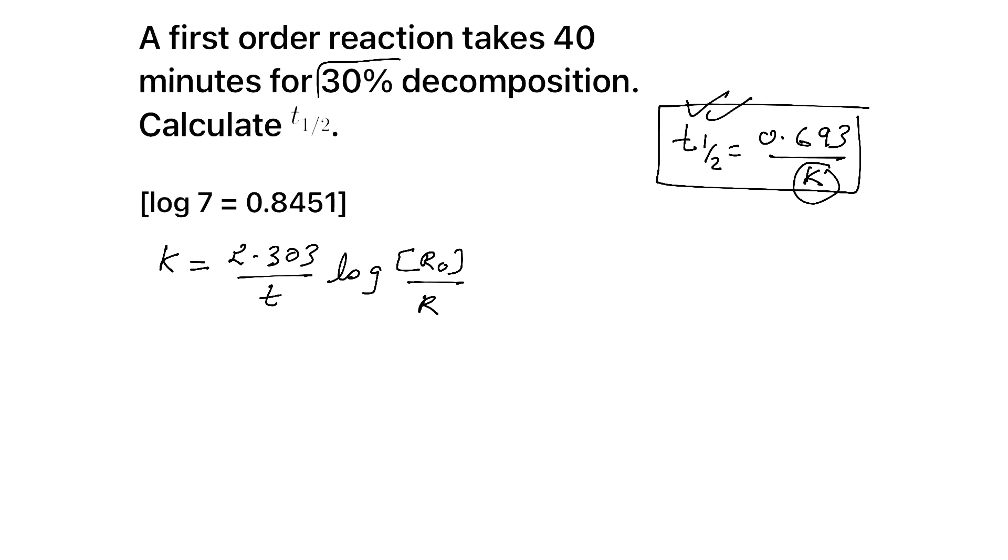Now you can see they give things in percentage, right? 30 percentage undergo decomposition. So what is left? If 30 percentage undergo decomposition, 70 percentage remains, right? So 70. Initial concentration, you can take it as 100, because the things are in percentage.